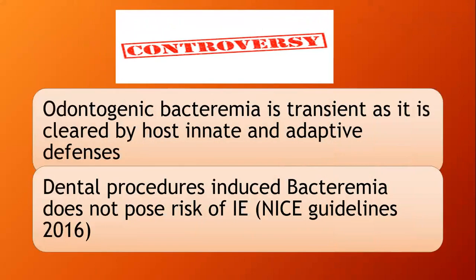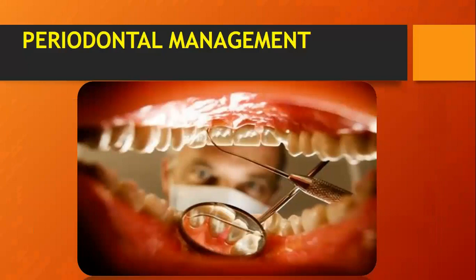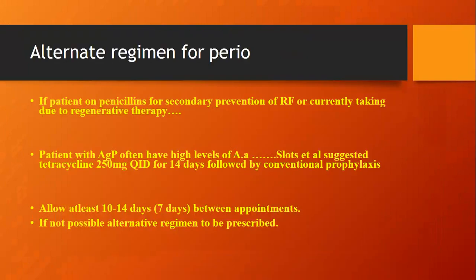The controversy around infective endocarditis prophylaxis involves two key points: first, bacteremia caused by dental procedures is transient in nature and is cleared by the host's innate and adaptive immune defenses. Second, dental procedure-induced bacteremia does not pose sufficient risk for causing infective endocarditis — meaning it is not enough to cause the disease. NICE guidelines 2016 support not giving prophylaxis based on these arguments.